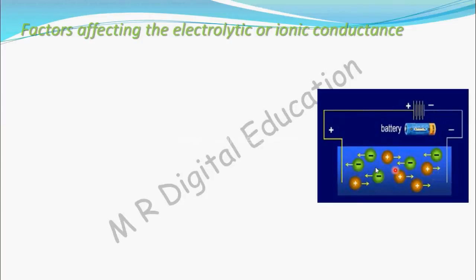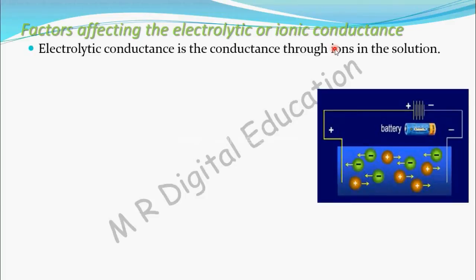In an electrolytic solution, both positive and negative ions are present. When you connect a battery to this solution, negative ions move towards the positively charged electrode and positive ions move towards the negatively charged electrode. This movement of ions is what produces conductance — which is why it is called Ionic or Electrolytic Conductance.